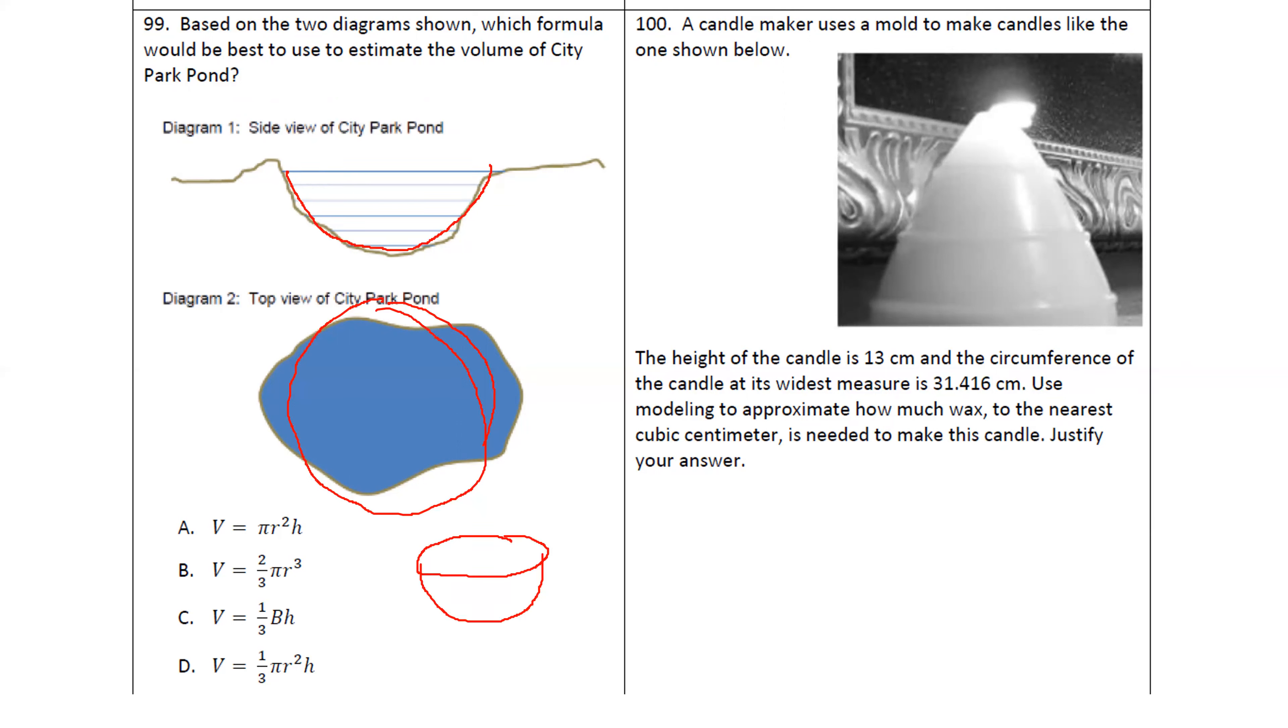So what three-dimensional shape? It's kind of like a, what? Half of a sphere, which is a hemisphere. Which one of these equations is a hemisphere? B. Yeah, a sphere is four-thirds pi r cubed. Hemisphere is two-thirds pi r cubed.